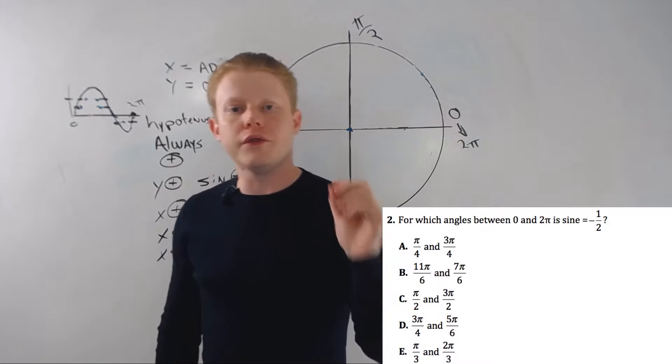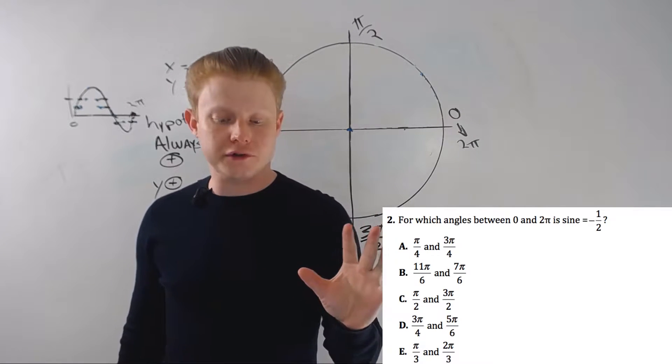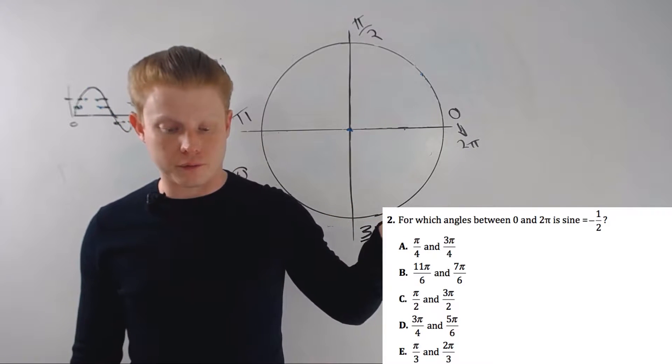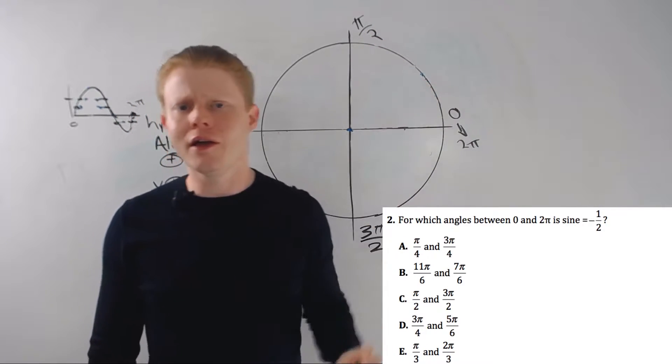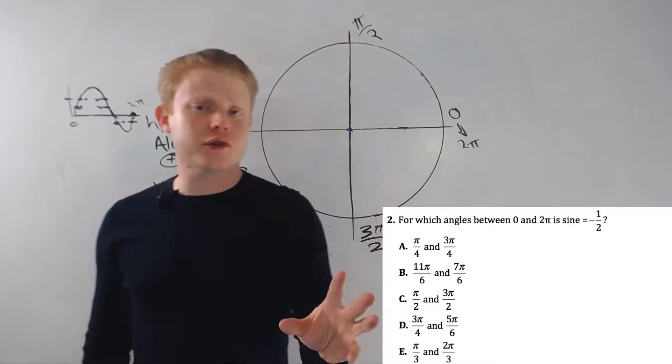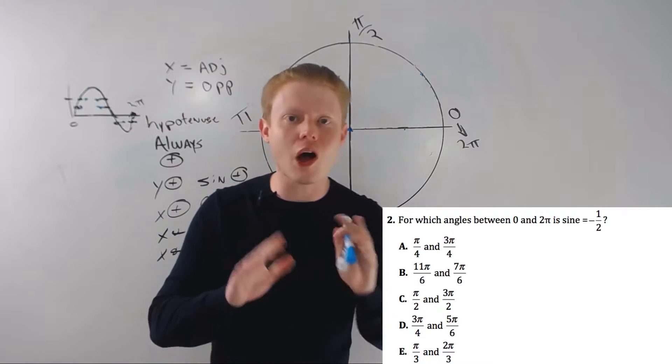Those will never be in the same quadrant. And by the way, I know I'm using sine as an example and sine is a problem we have right here. But this is the same, the same is true for tan and cosine as well. Always two angles.